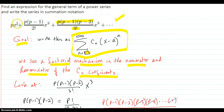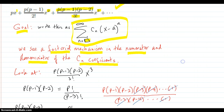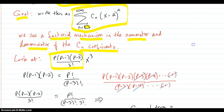The powers on x are pretty easy: one, two, three. So let's look at this part first: p times p-1 times p-2 over 3 factorial. What's going on there? Well, the factorial stops, so I have to express that somehow.